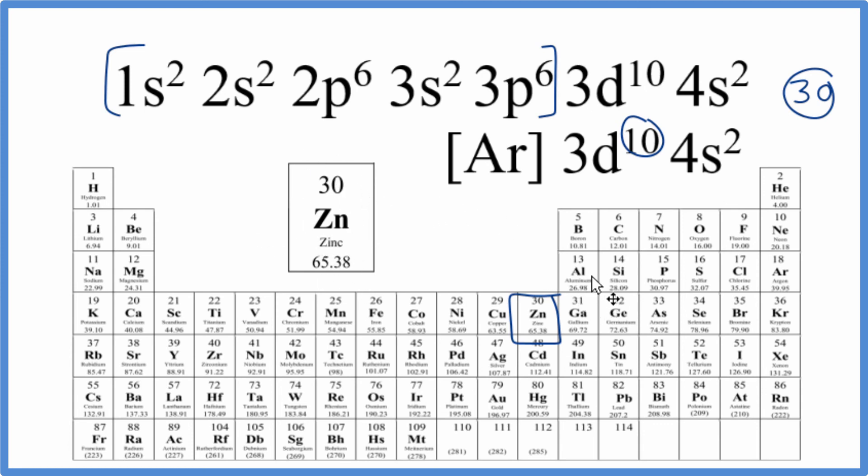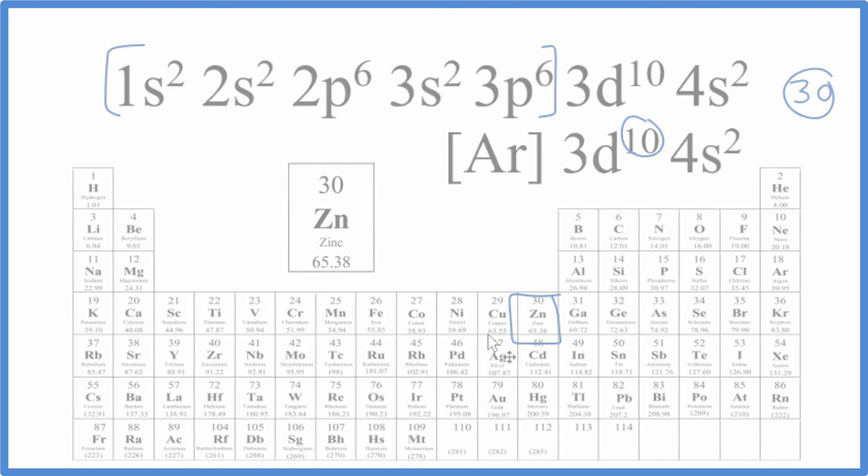This is Dr. B determining which element on the periodic table is represented by 1s2, 2s2, 2p6, 3s2, 3p6, 3d10, 4s2. It is zinc. Thanks for watching.